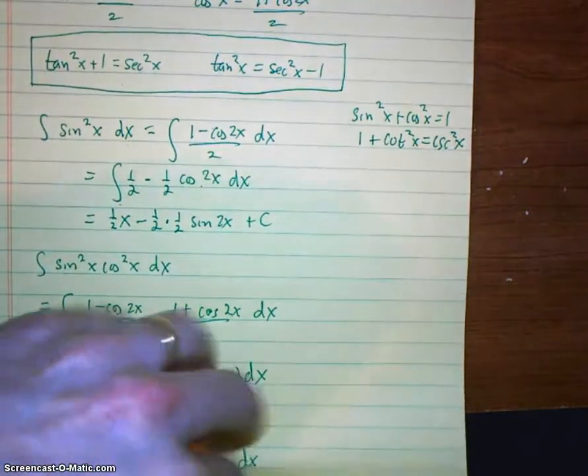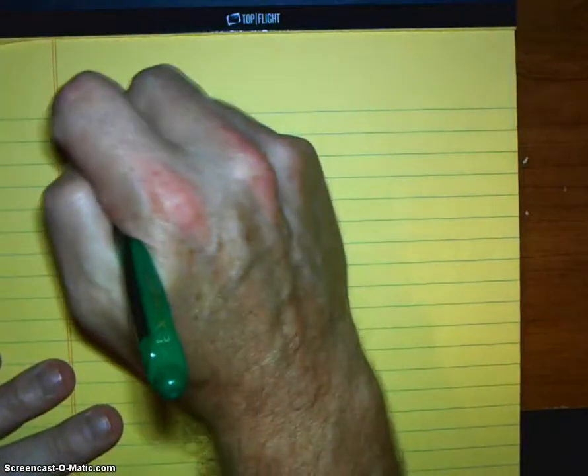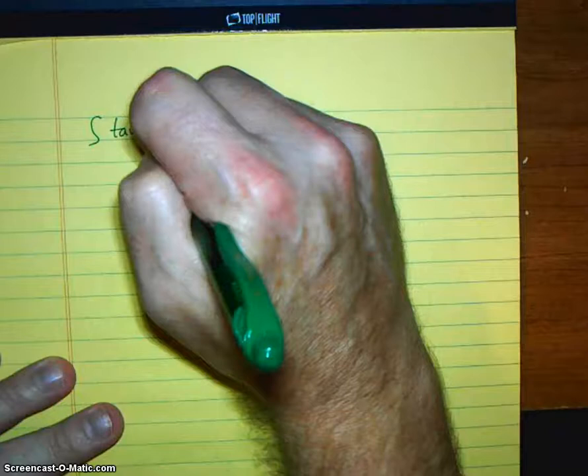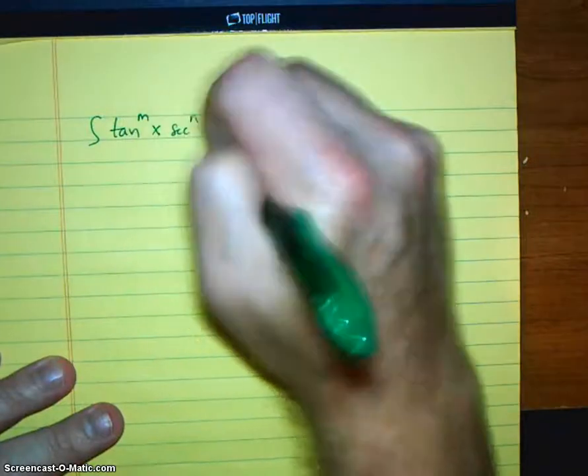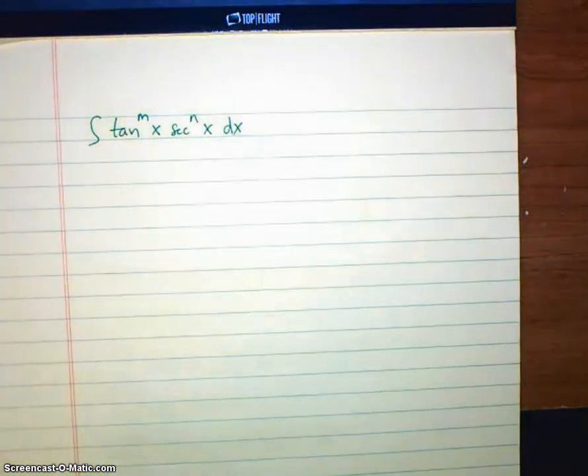All right, so what we're going to be looking at. We're going to be looking at something integral. Tangent to the m. Secant to the n. Dx. All right, like there were for sines and cosines, there'll be three rules. Rule number one.